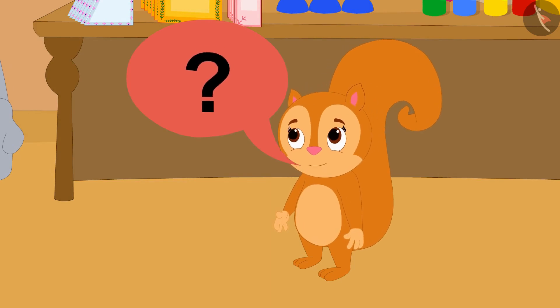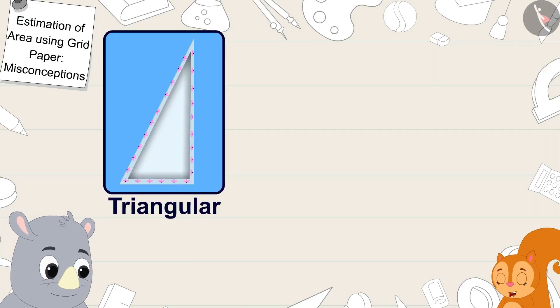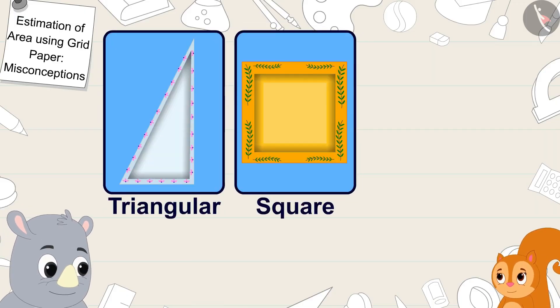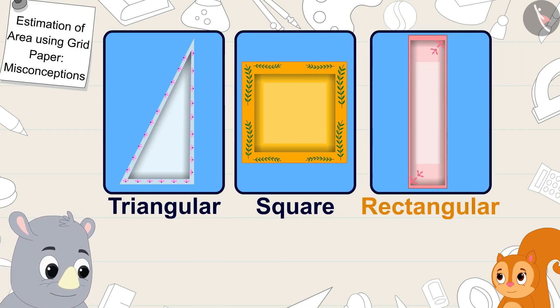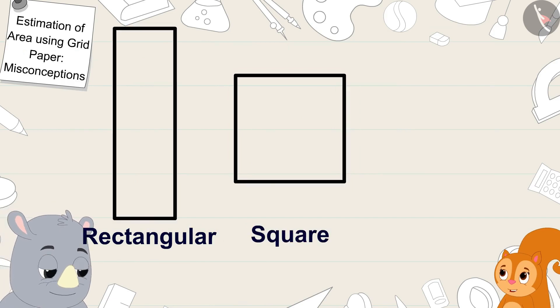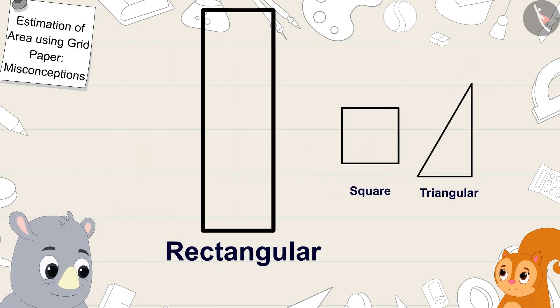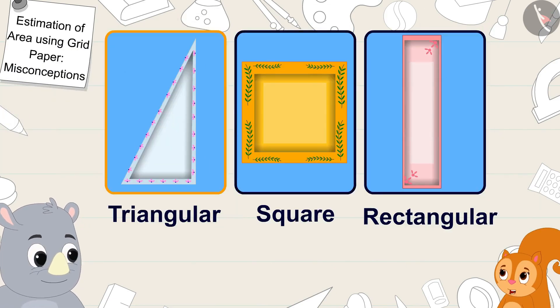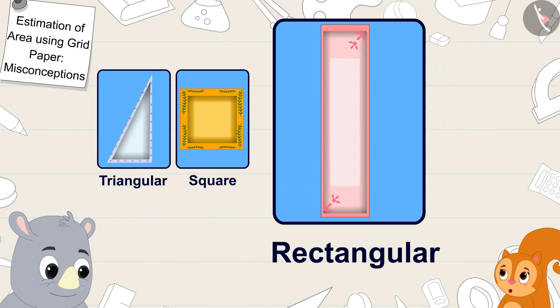But how is that possible, Gaggoo? This plate is triangular, this one is square shaped, and this plate is rectangular. Because rectangle is bigger than square and triangle, the rectangular plate is bigger than both these plates, Chanda said to Gaggoo.